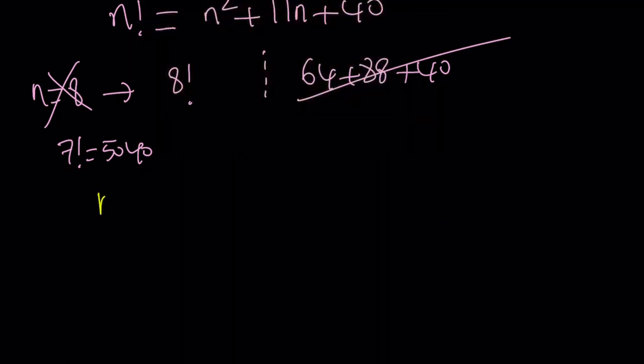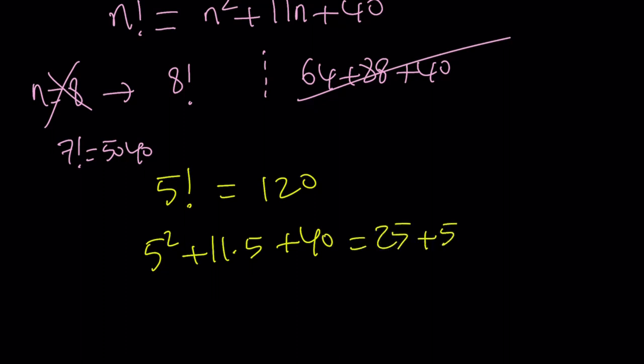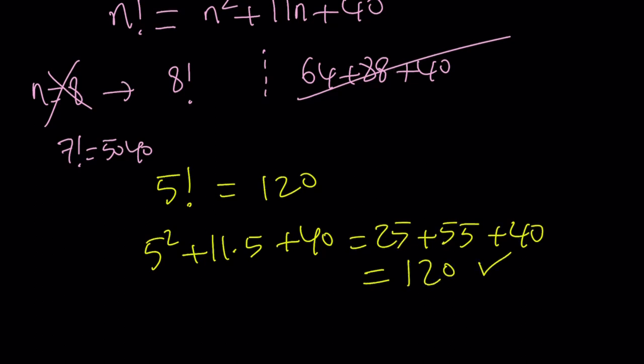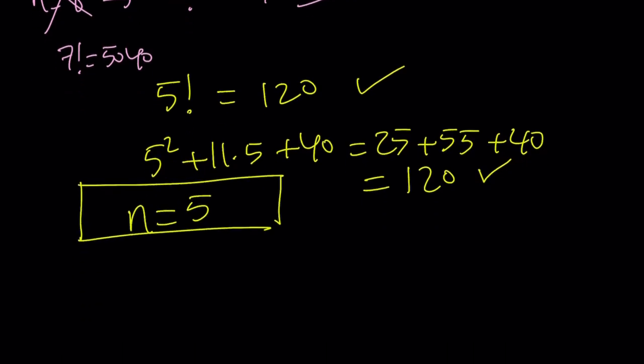We have n factorial equals, I already have the equation. I don't have to rewrite it. So I'm going to replace n with 5. I have 5 factorial, which is equal to 120. On the right-hand side, I have 5 squared plus 11 times 5 plus 40, which is equal to 25 plus 55 plus 40. And that is equal to 80 plus 40, which is 120. And yay! n equals 5 is a solution. And that is the only solution that works.